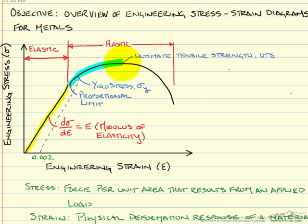If we continue to load our specimen with additional force, we will find that the specimen will eventually fail. At this point, our bonds have completely broken. As we did with the yield stress, if we want to understand the engineering strain at fracture, we need to unload parallel to our modulus of elasticity line.